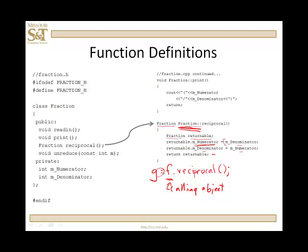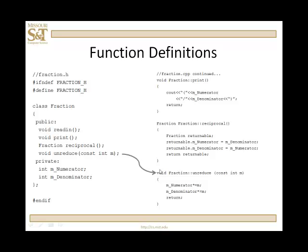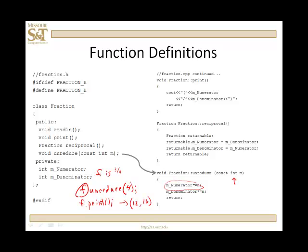I've declared a local fraction, defined it, built it the way I want, and then I return it — that gets assigned to g. And the unreduce function: I'm going to pass in an integer and multiply both numerator and denominator by that value, replacing them with the product. If my fraction was 3 quarters and I pass in 2, it's going to be 6 eighths. If f was 3 quarters and f calls unreduce passing in 4, then f calls print — it's going to be 12 sixteenths. F is the calling object, f gets changed. The member variable actually does get changed in this function.